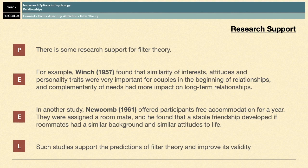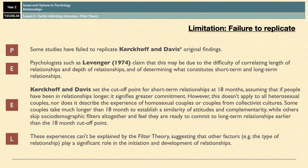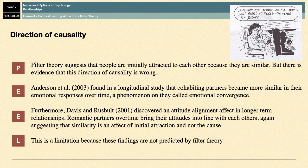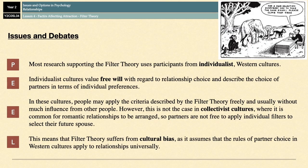On the next four slides you've got all of the evaluation points written out fully as PEEL paragraphs. Relationships and Filter Theory are paper three topics, which means you are most likely to get an essay on it if it comes up in your exam. Make sure you can outline Filter Theory in a nice concise manner, and if you want to get into the top band of essays, try to get three to four really good evaluation points. Those four that I've given you are the easiest ones to remember, but obviously it is completely your call.